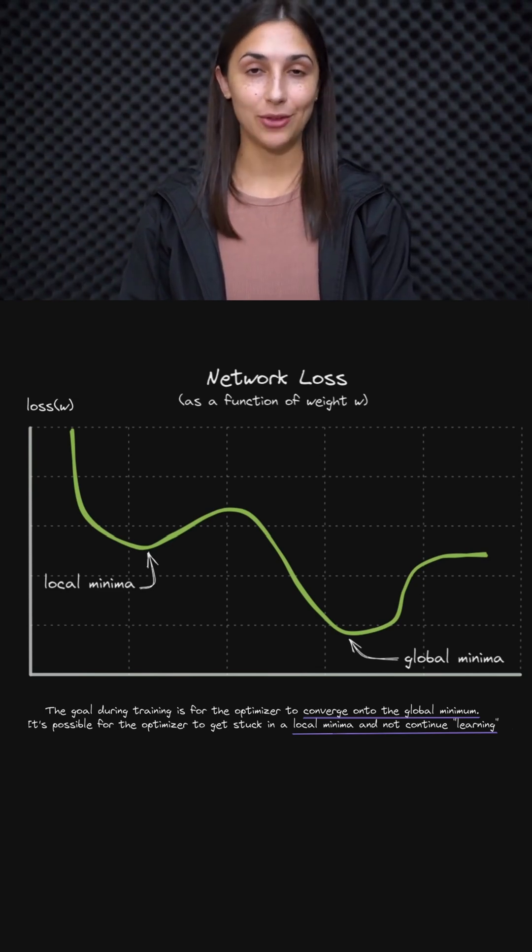While these simple 2D and 3D illustrations help to get the point across about the intuition of what can happen during the training process, it's important to keep in mind that the loss is usually a function of sometimes millions of weights in the network.